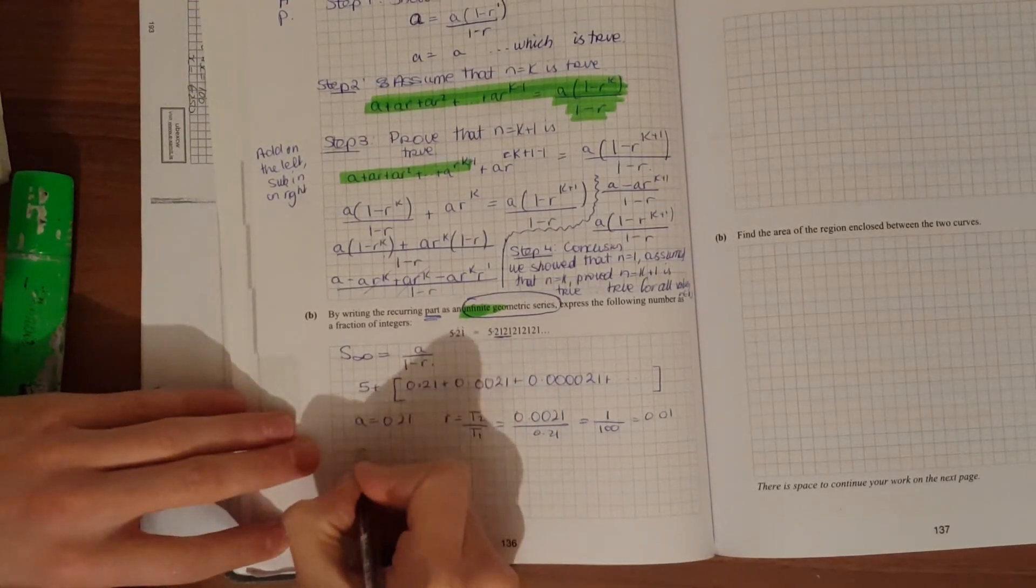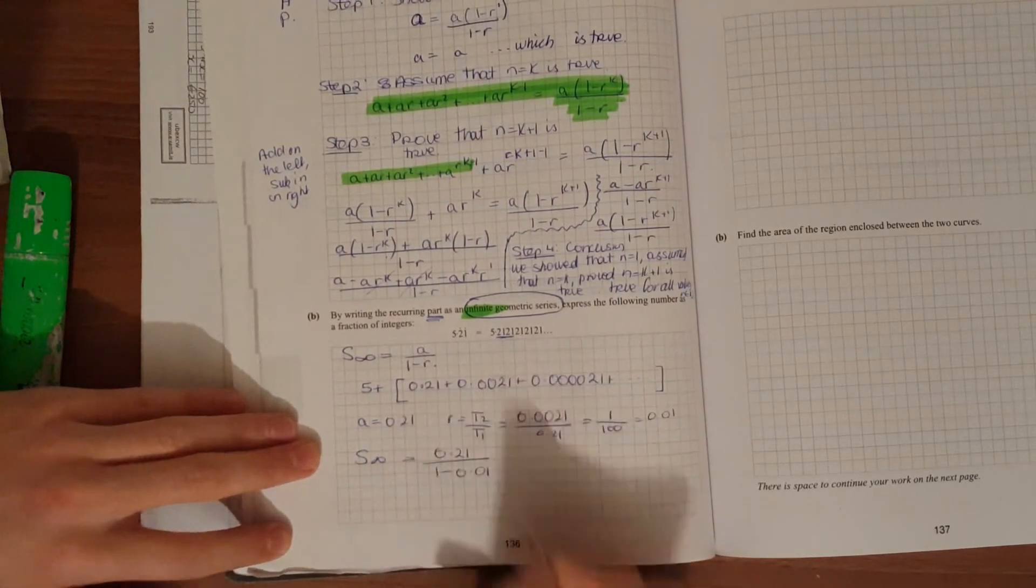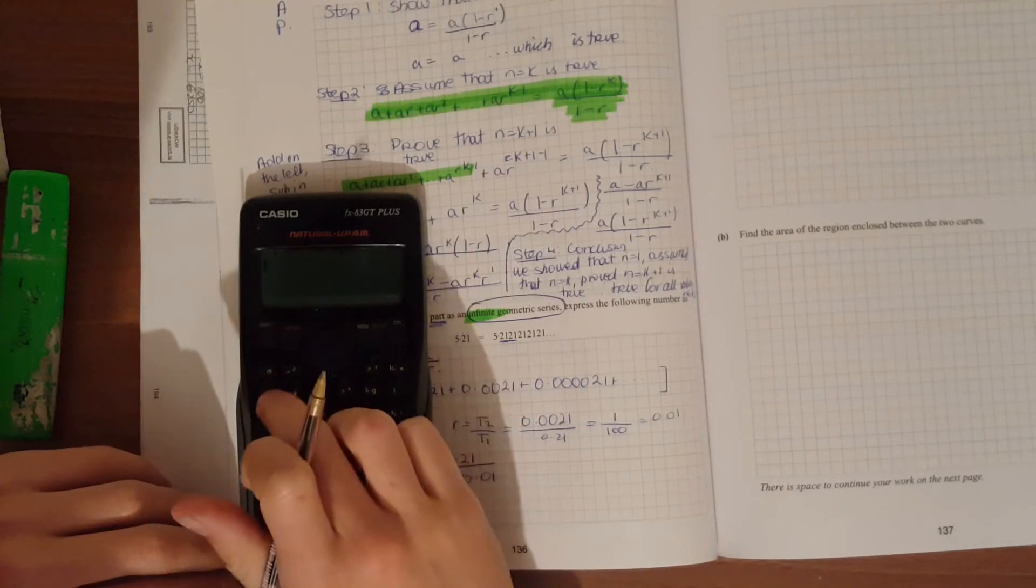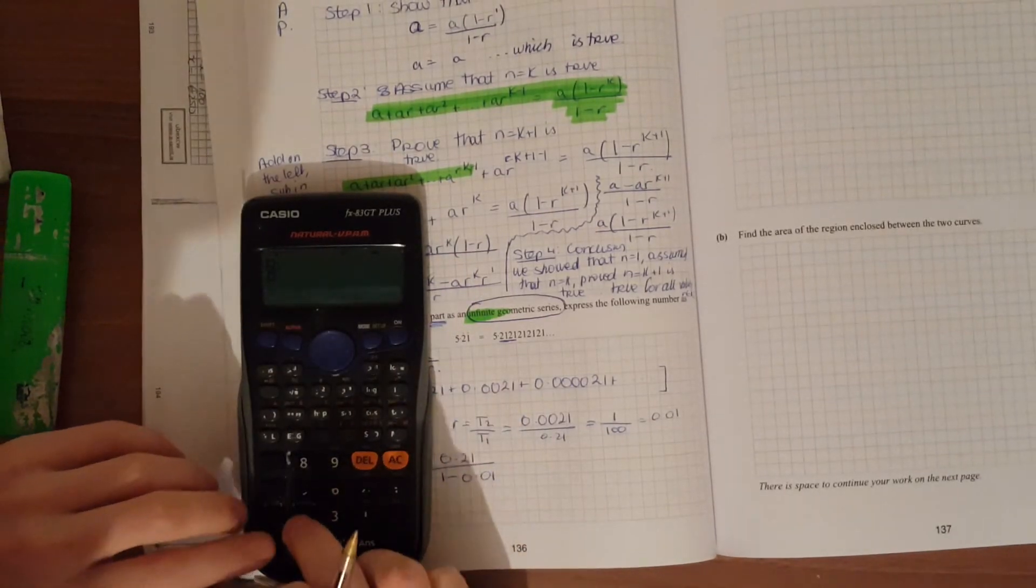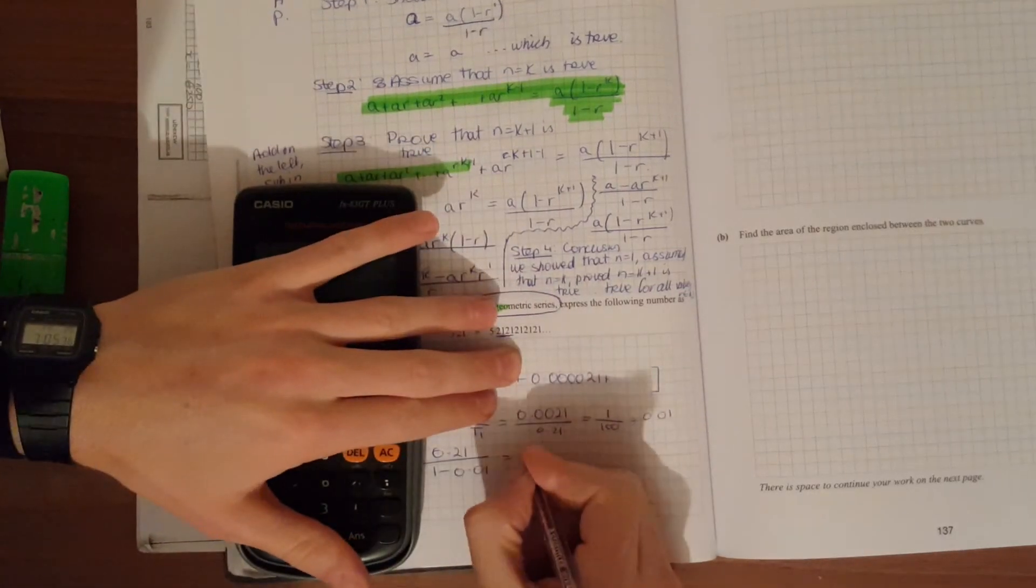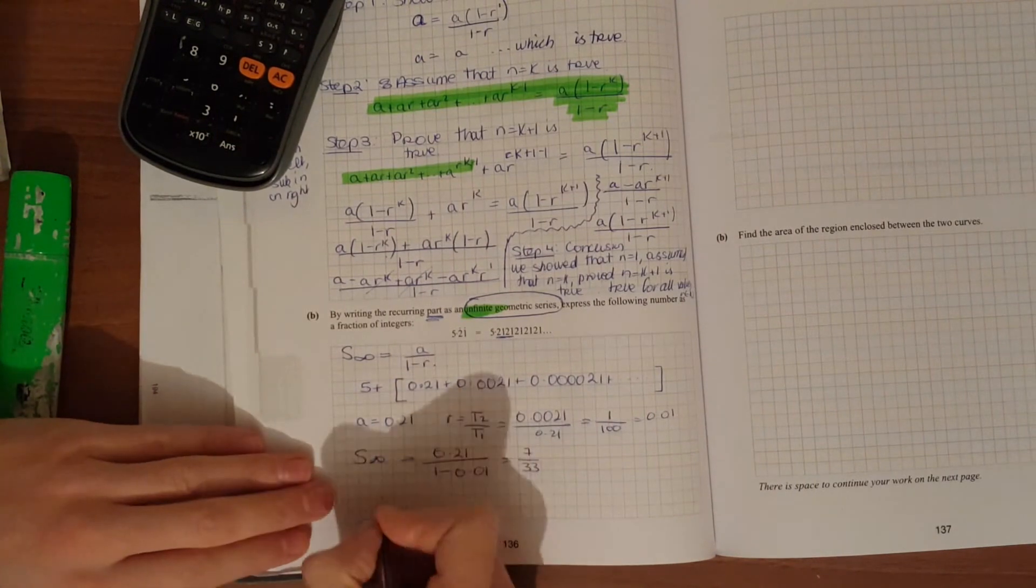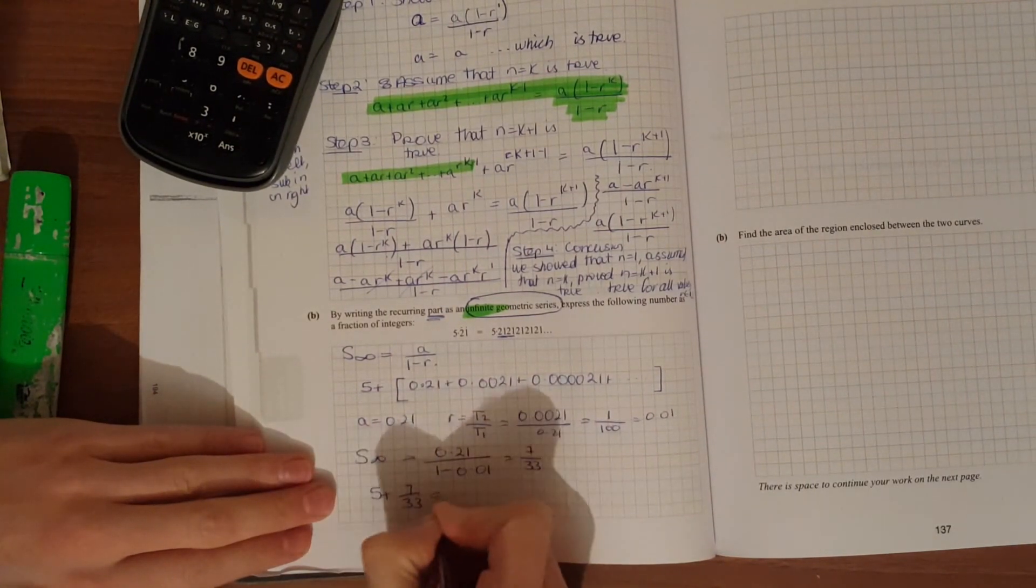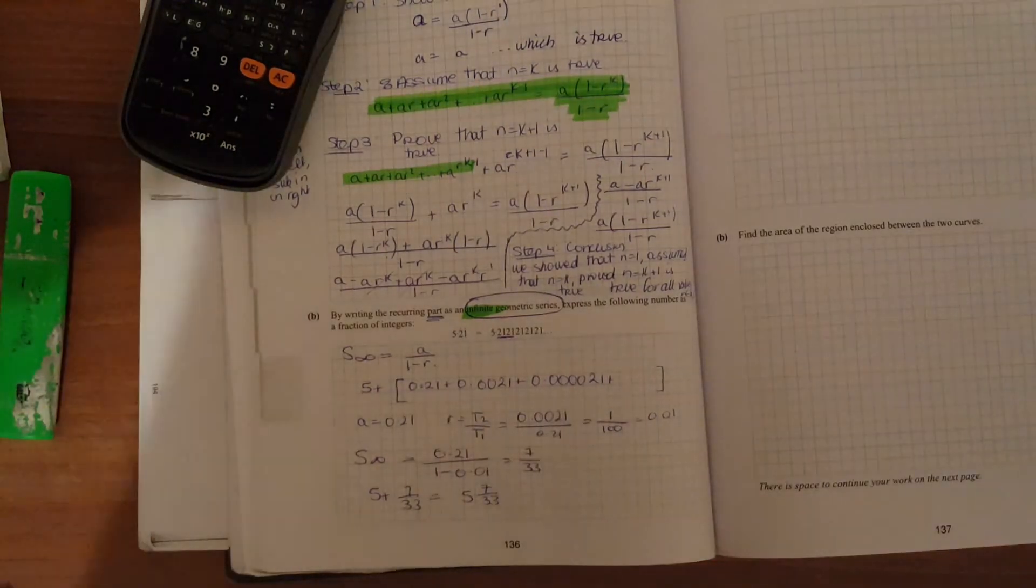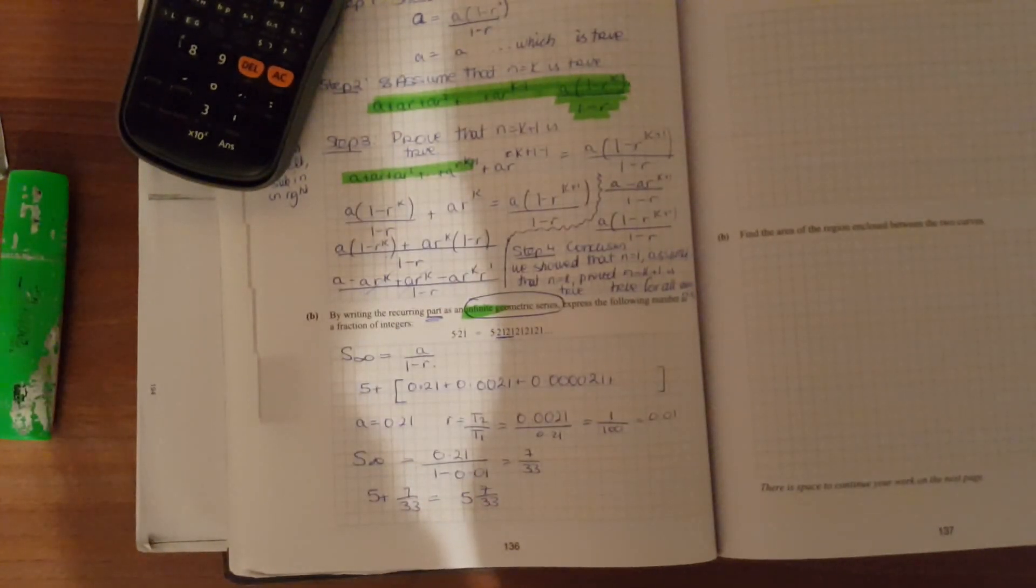So we'll put it into this formula. And then just simply put that into your calculator and we'll get an answer. 0.21 divided by 0.99, that gives us about 0.212. And then don't forget your 5, add that on. 5 plus 0.212 gives us 5.212.